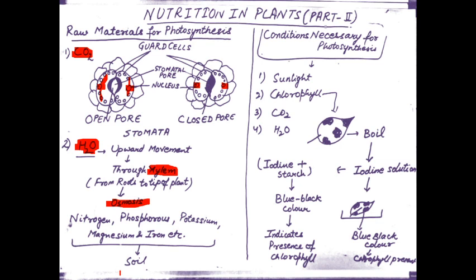The basic conditions for photosynthesis are: first, the presence of sunlight — sunlight is very much necessary for photosynthesis, since photo means light and synthesis means to obtain, and plants can only obtain food if sunlight is available. The second requirement is chlorophyll, which is necessary for conversion of light energy into chemical energy. The third and fourth requirements are carbon dioxide and water.